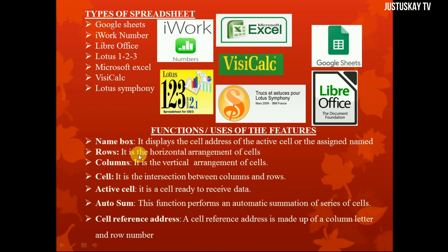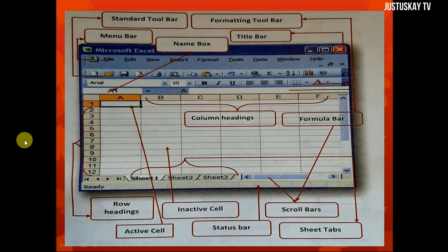Rows: a row is the horizontal arrangement of cells. This is what a row looks like — a horizontal arrangement of cells. We studied that this side contains the row headings.